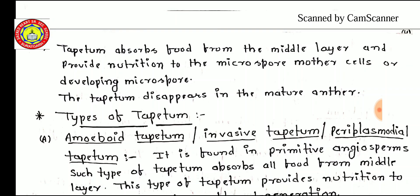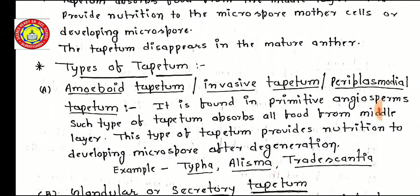The tapetum disappears in the mature anther because it is consumed by the developing pollen grains. There are two types of tapetum. The first type is amoeboid tapetum, also known as invasive tapetum or periplasmodial tapetum. It is found in primitive angiosperms. This type of tapetum absorbs all food from the middle layer and provides nutrition to the developing microspore after degeneration — meaning it degenerates first, then provides nutrition.